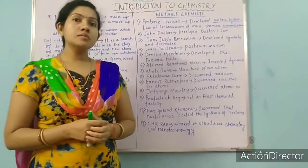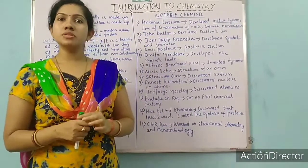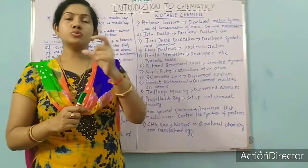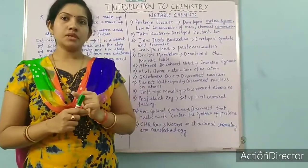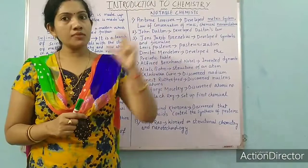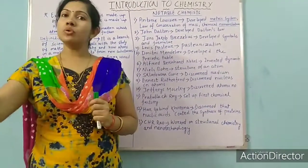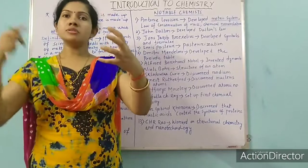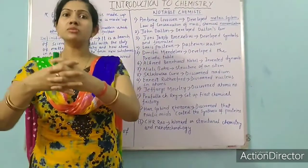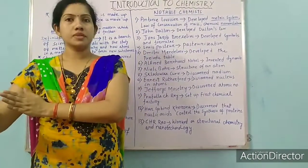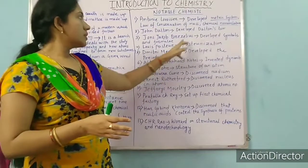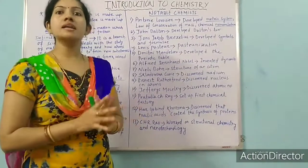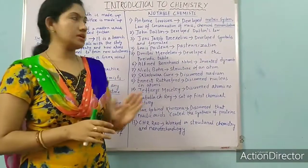Symbols — for hydrogen we are using the symbol H. For water we are using the formula H₂O, which means two hydrogen and one oxygen combine with each other to form water. H is the symbol of hydrogen and H₂O is the formula of water. He developed symbols and formulas — about these in particular, we will read in our next chapter.